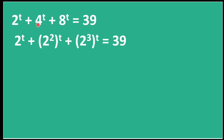We can write 4 as 2 squared and we can write 8 as 2 cubed, equal to 39. In the next step we will exchange the exponents — swapping 2 and t for the 4 term, and exchanging 3 and t for the 8 term.